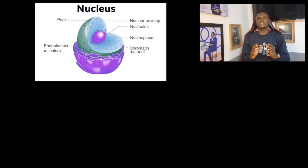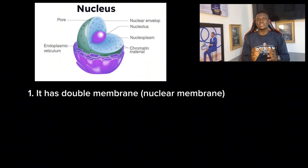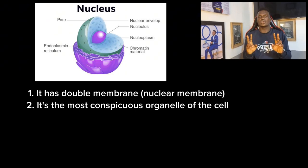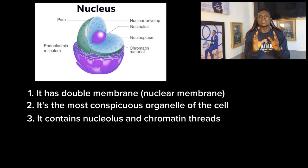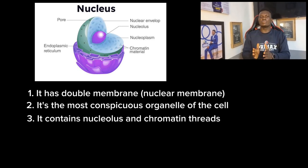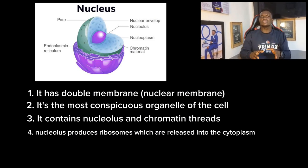We'll start from the center of the cell and work outward. The first organelle is the nucleus. The nucleus is double-membrane, surrounded by the nuclear membrane, and is the most conspicuous organelle in the cell. It contains two major parts: chromatins, which are tiny structures of DNA or chromosomes present within the nucleus, and the nucleolus. The nucleolus is a fluid structure inside the nucleus that produces ribosomal RNA, which in turn produces ribosomes involved in protein synthesis.